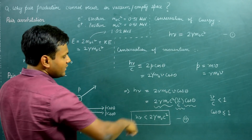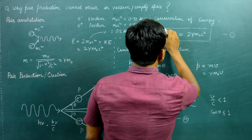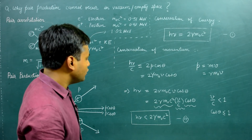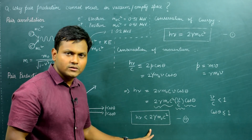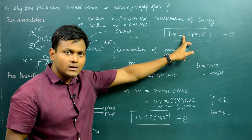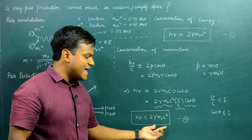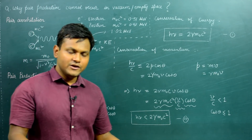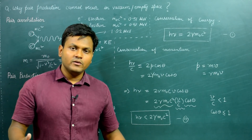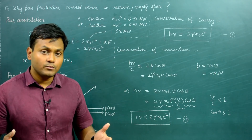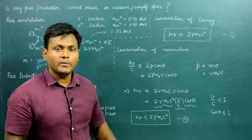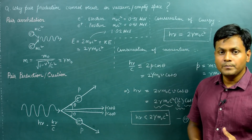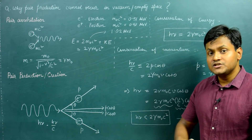This is the contradiction. From conservation of energy (equation one): hν = 2γm₀c². But from conservation of momentum (equation two): hν < 2γm₀c². Conservation of energy says these two quantities are equal, but conservation of momentum says this quantity must be strictly less than the other. Since both conservation laws must hold in any physical process, and they cannot both be satisfied here, this process is not possible in vacuum.